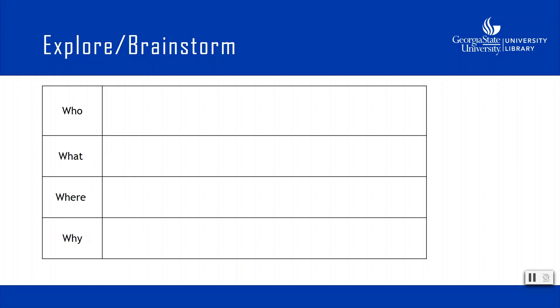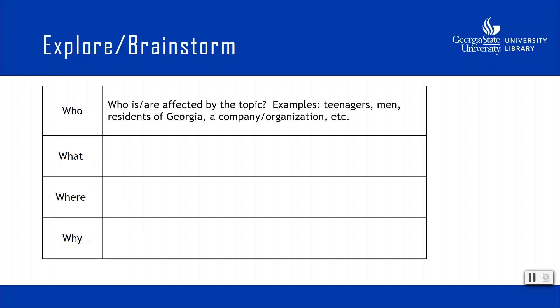Now let's talk about the explore or brainstorm part of the process. Once you have picked your topic, you can start to explore different things about it. To help brainstorm, it may be useful to ask yourself who, what, where, and why about the topic. The 'who' refers to specific groups that are impacted or affected by your topic — for example, teenagers, men, residents of a specific state, a company, or organization.